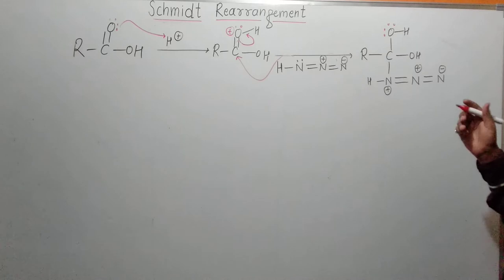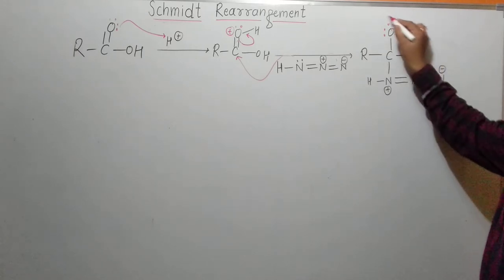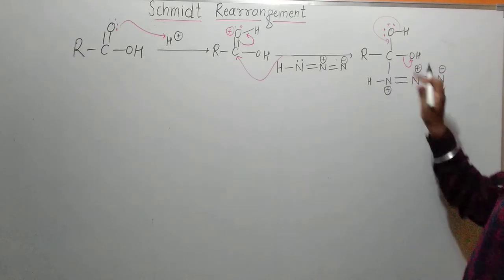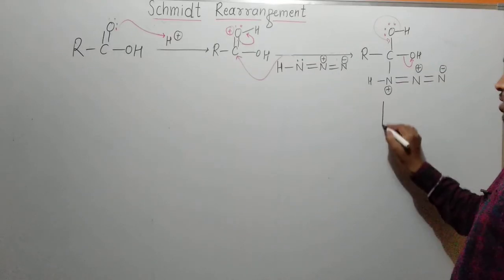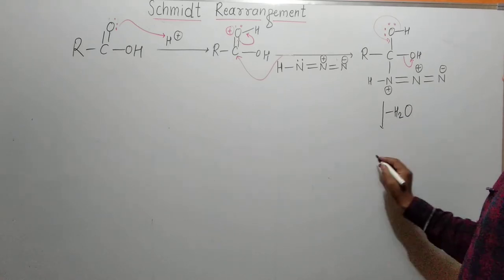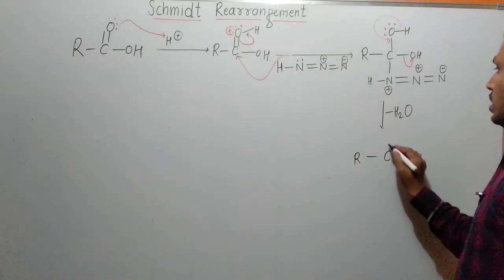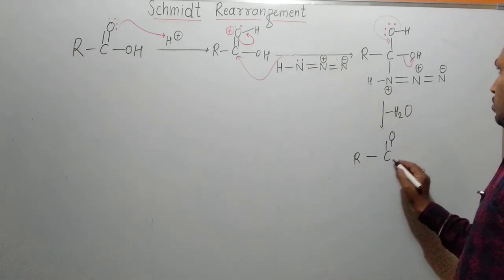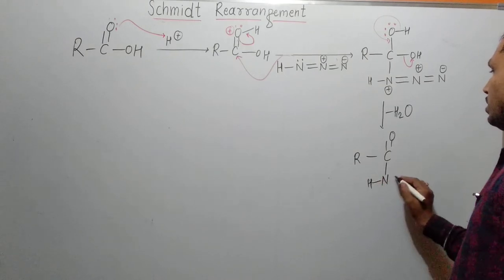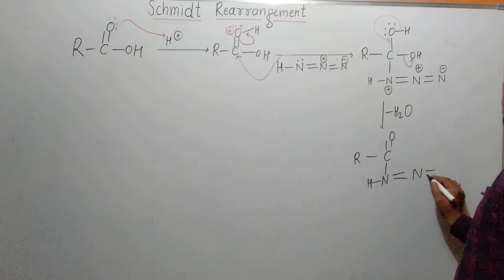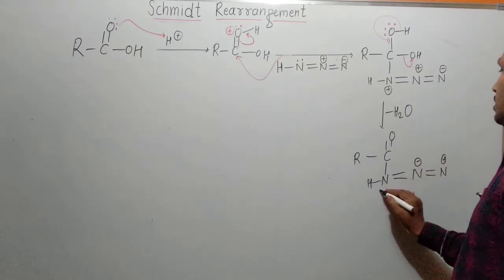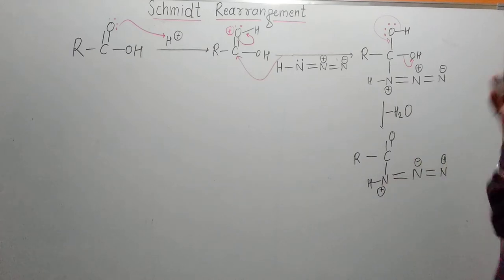Now in this case, look here — this electron pair will come in, and the O-H will leave. In short, there is a loss of water molecule — loss of H₂O. So now what's left behind: we have R-C(=O) on this side, and from the other side we have nitrogen with a hydrogen, a double bond N=N, with positive charge on one nitrogen and negative charge on the terminal nitrogen.